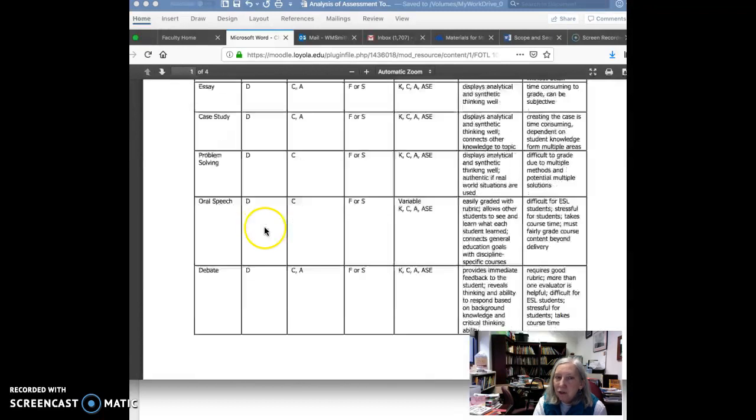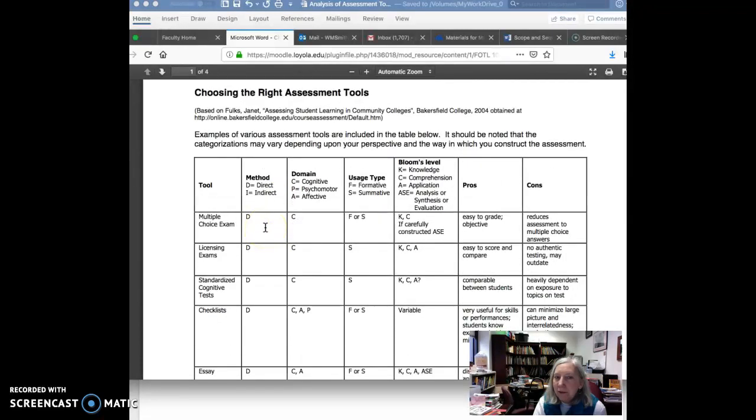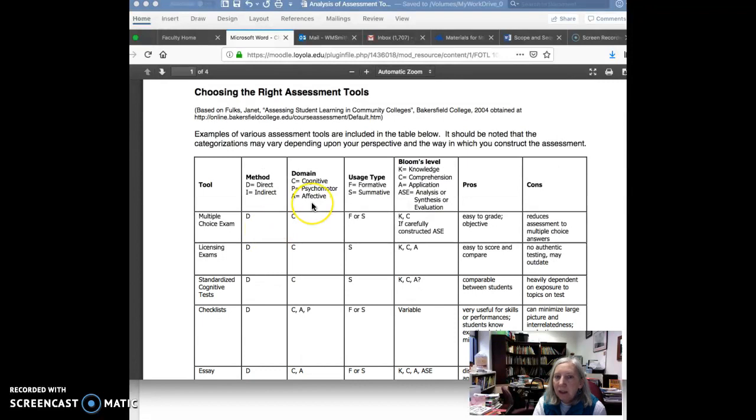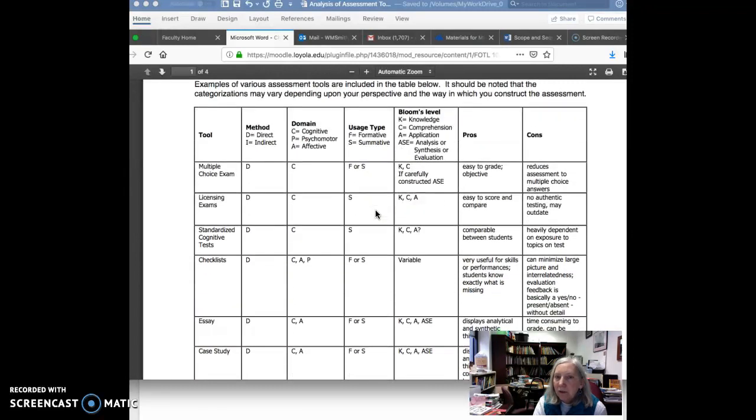And then you would look at each column and you would say, is it a direct or an indirect? Is it addressing domains of cognitive, psychomotor, or affective? You would go through each of these and you would describe how that tool fits into one of those columns.